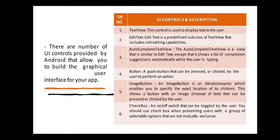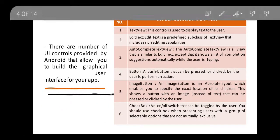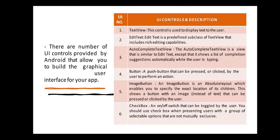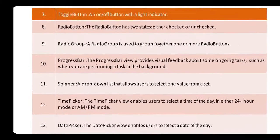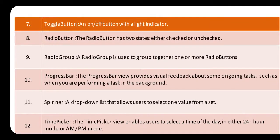Other than that, Checkbox — this is an on or off switch that can be toggled by the user. You should use the checkbox when presenting the user with a group of selection options that are not mutually exclusive. Next is the RadioButton — it has two states: checked or unchecked.